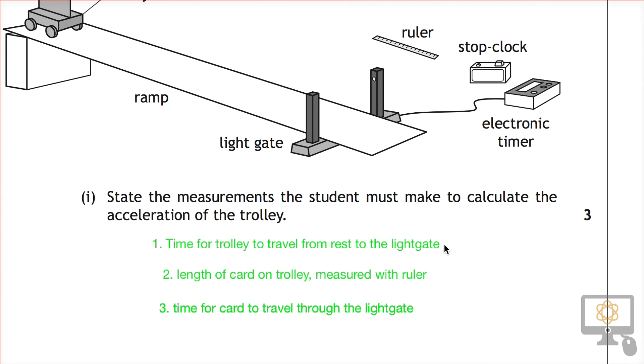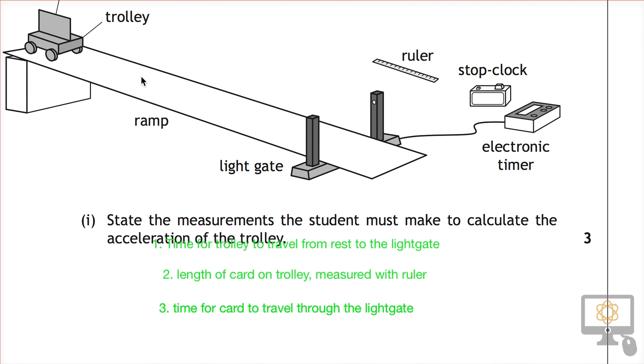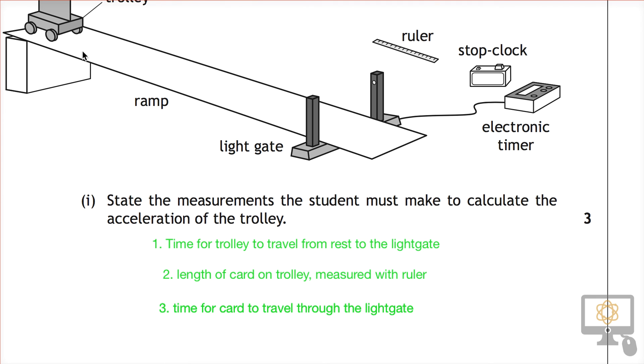Now there are a couple of things just to make clear here. This first one, the time for the trolley to travel from rest to the light gate—it wouldn't be sufficient just to say the time for the trolley to travel down the ramp, because that's not specifying exactly how far it's traveling. It also wouldn't be sufficient just to say the time as measured on the stop clock, because it doesn't explain what the stop clock is actually measuring.